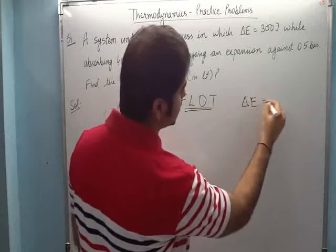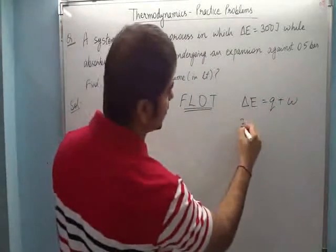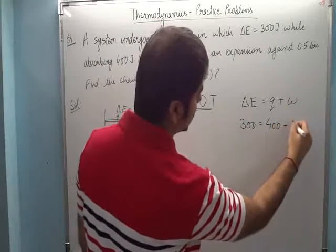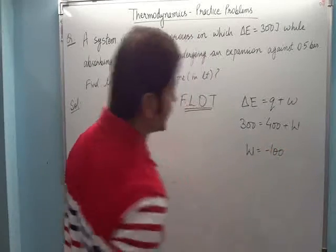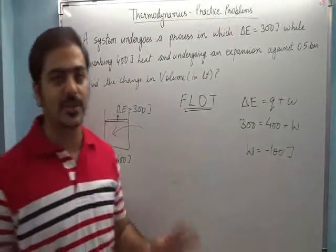Delta E is equal to Q plus W, that is work done. Delta E is equal to Q plus W. Delta E ki value is 300, Q ki value is 400, so work done comes out to be minus 100. Its unit will be joules. Minus simply means that expansion is happening.